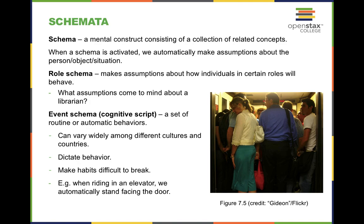Event schemas or cognitive scripts help us distinguish how to behave in different situations. For example, we're not going to act the same at a fancy restaurant as at a fast food chain. At a fast food restaurant, we go up to the counter and order our food. But at a nicer restaurant, the podium at the front is just to be seated. Our cognitive scripts help us navigate these different events and how we should behave.